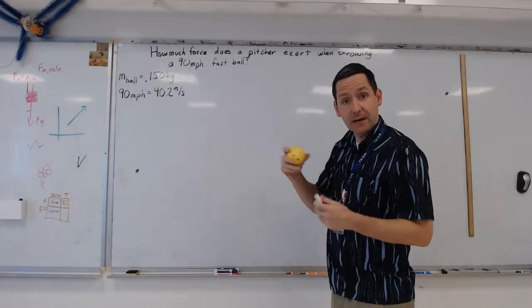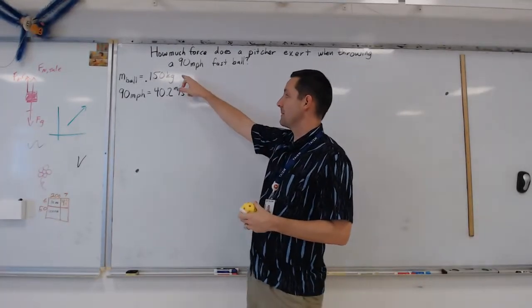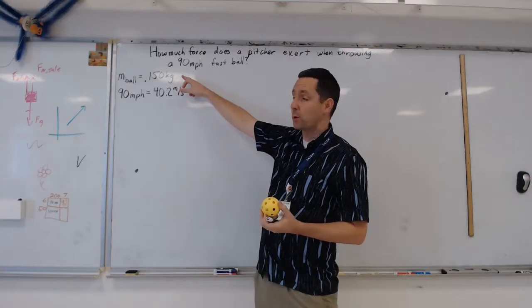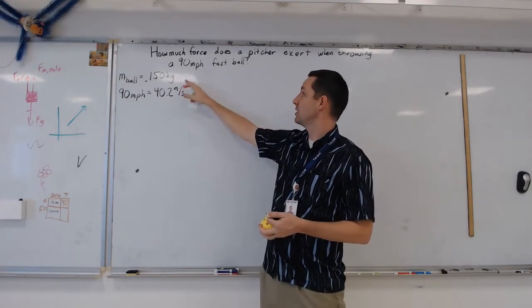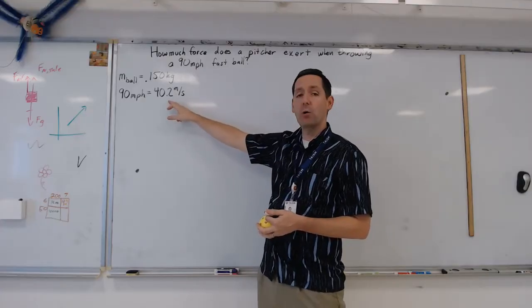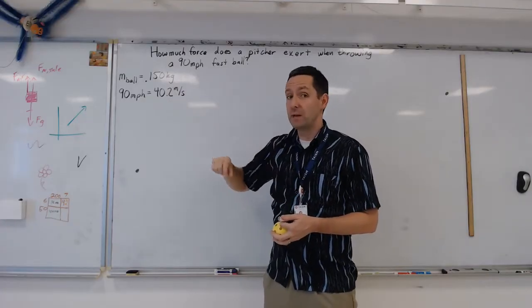We're going to pretend that it's a baseball. Baseball has a mass of 150 grams, so that's 0.150 kilograms, and I have already done the calculation here of turning 90 miles per hour into 40.2 meters per second, so that's our SI units.